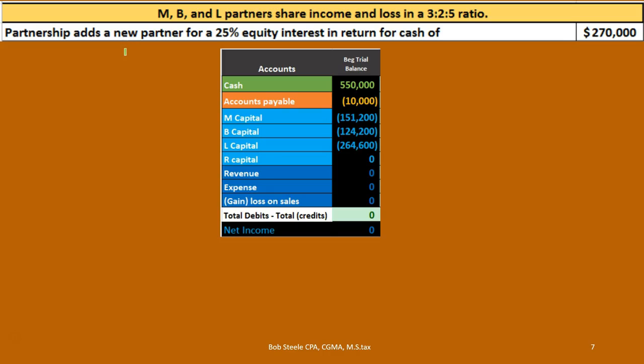This is a variation of the same problem — very similar — except now we're going to bring a new partner on the books. The same 25% interest that the partnership and the new partner have agreed on in a market environment, and the new partner is going to give the partnership $270,000. So the agreement is that the partnership will give a 25% interest in exchange for the new partner giving the partnership $270,000.